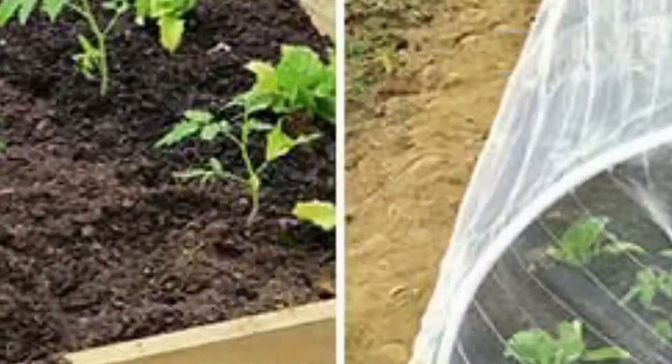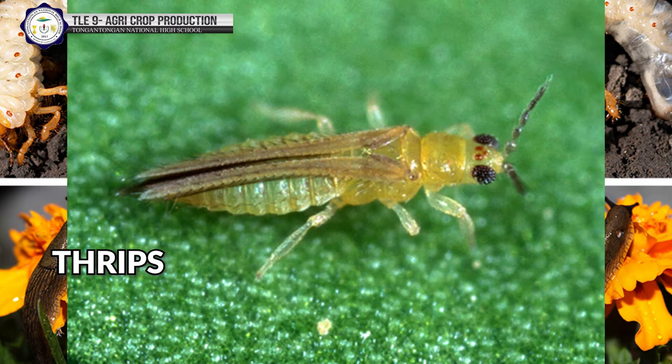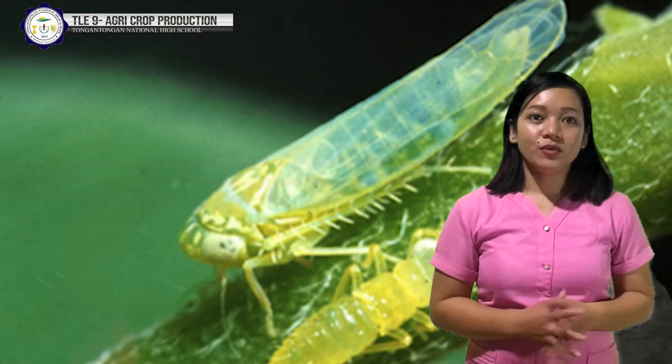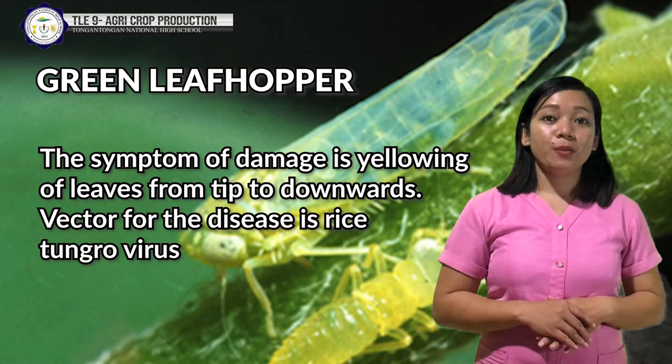The last category is insects. The first insect pest is thrips — there is laceration of the tender leaves and the plant sap is sucked. Young seedlings show yellow or silvery streaks on the leaves. You can spray any insecticide available in the market to control infestation. The second one is the green leafhopper — the symptom of damage is yellowing of leaves from tip downwards. The associated disease is rice tungro virus, characterized by transitory yellowing. To control its infestation, apply carbofuran at the recommended dosage based on product recommendation.